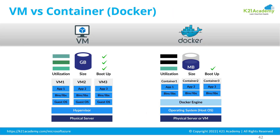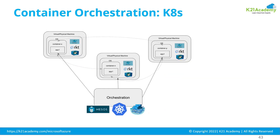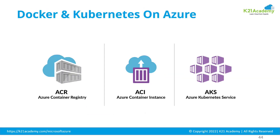So we have two key things: a container runtime, which is Docker, and a container orchestration tool, which is Kubernetes. The Azure implementation of Docker containers is Azure Container Instance, and the Azure implementation of Kubernetes is Azure Kubernetes Service, or AKS.